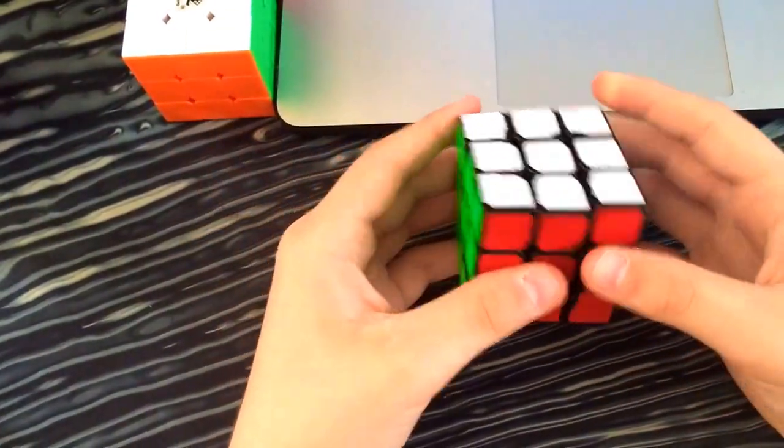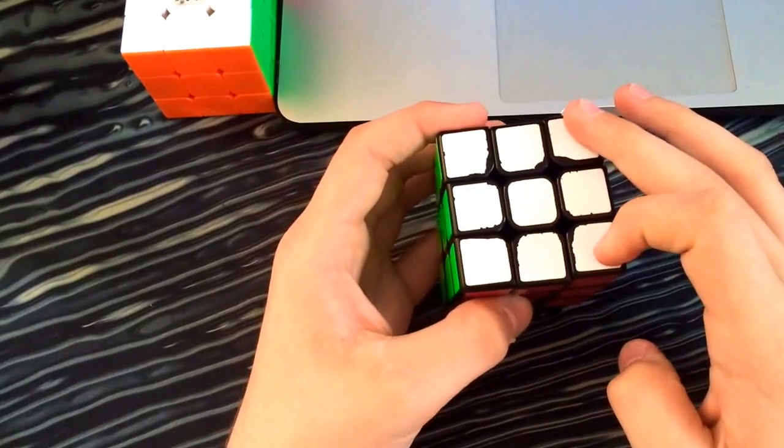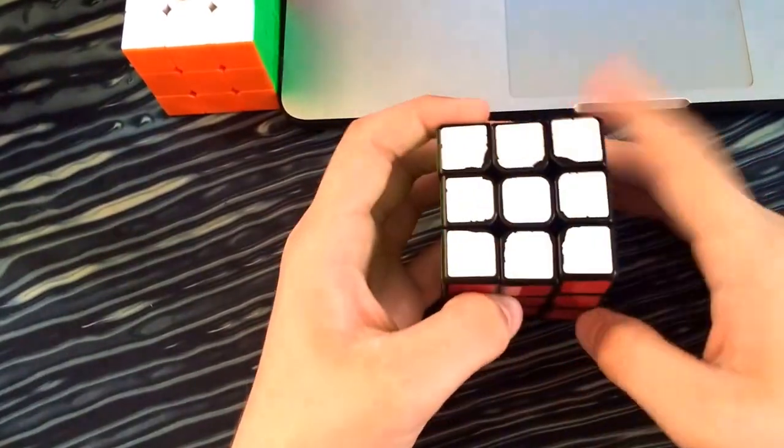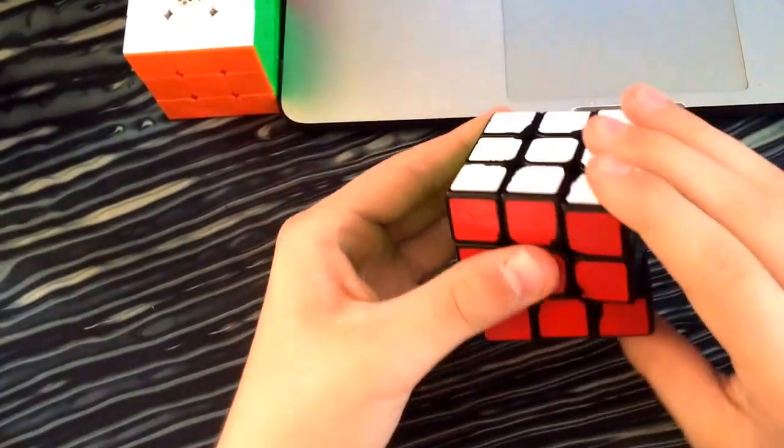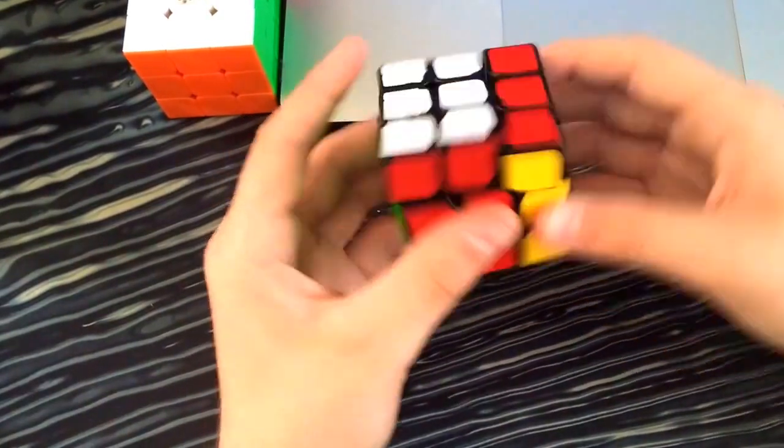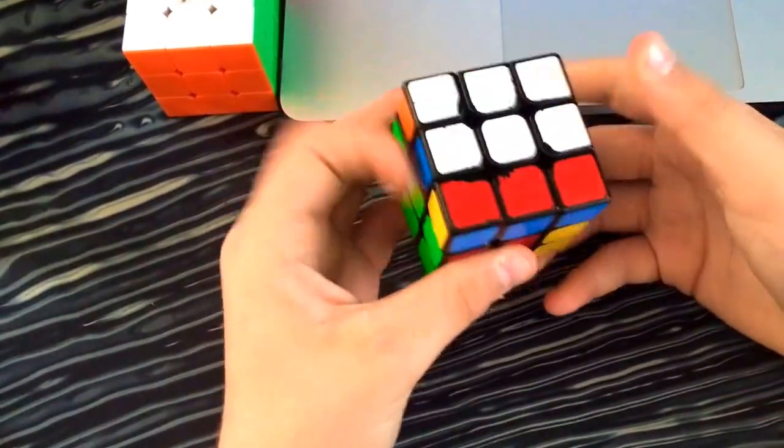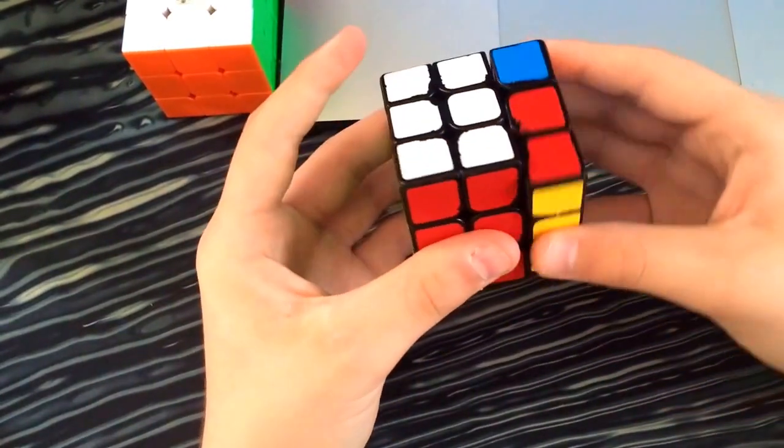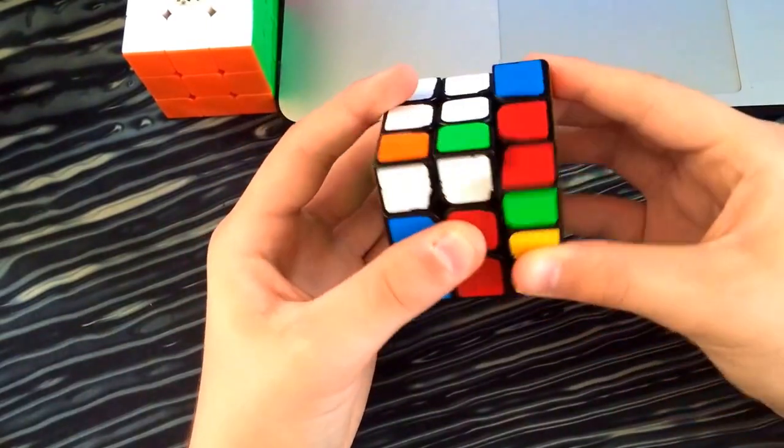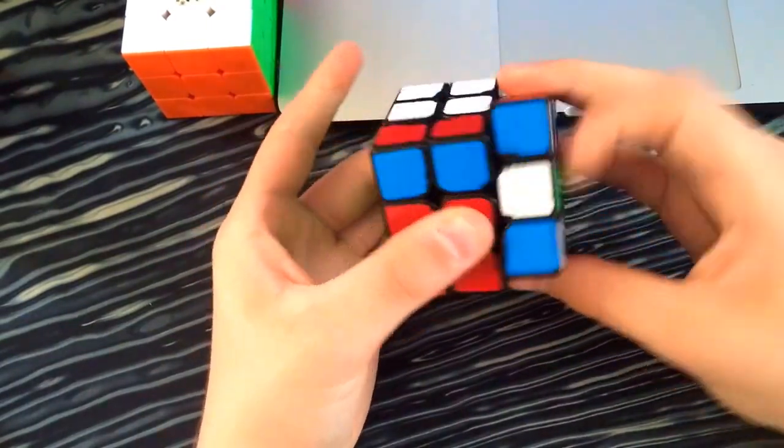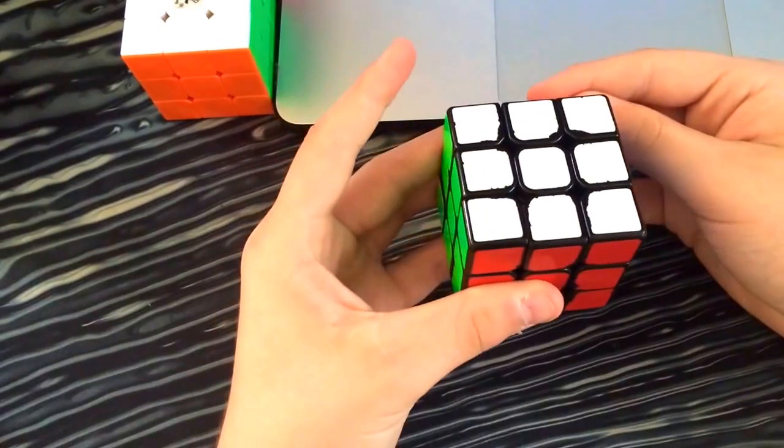Alright, and then for the other R perm, that swaps. I use it so it swaps these and these. I don't do the lefty version. Which I could. I do that for OH, but. Slow. Alright.